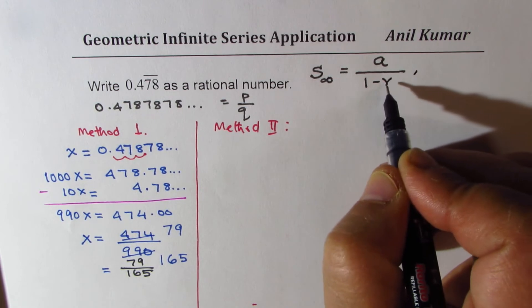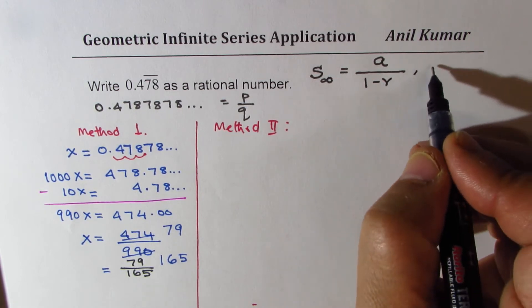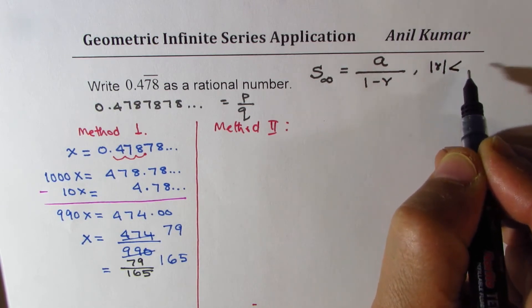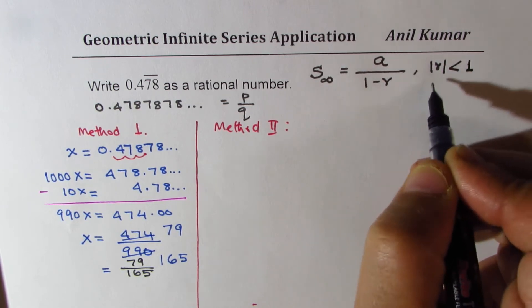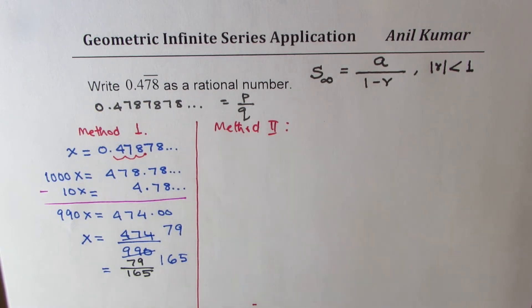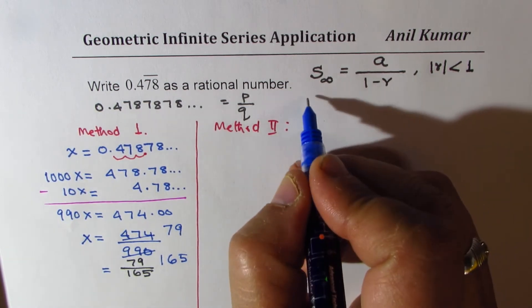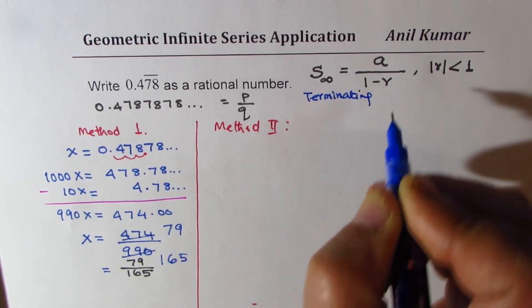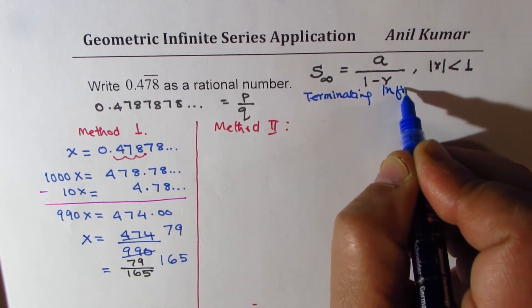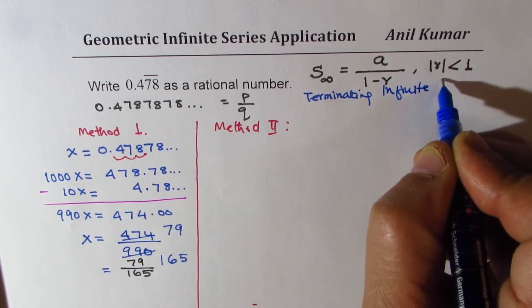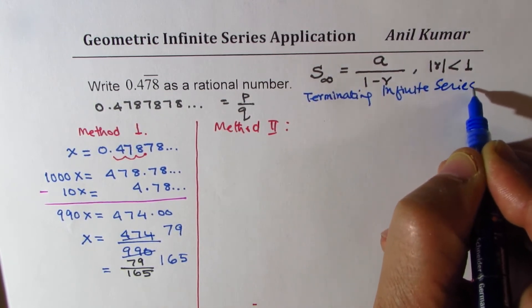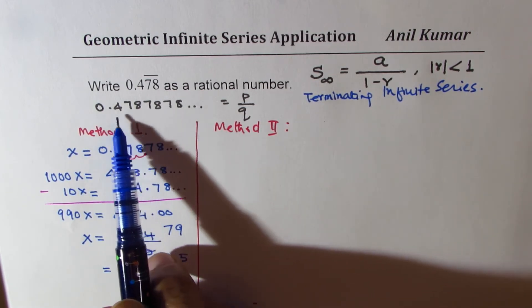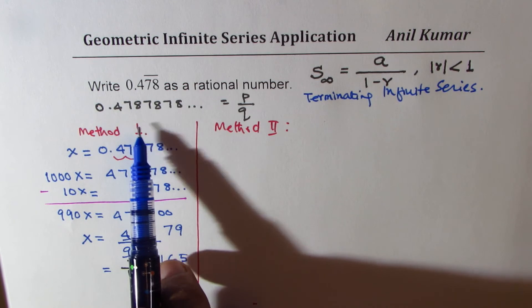Where the value of r, the absolute value of r, is less than 1, so that it terminates, because we are looking for a terminating series. That's the formula which we are going to use. Now we need to find what is a and what is r in this particular example to find the sum.